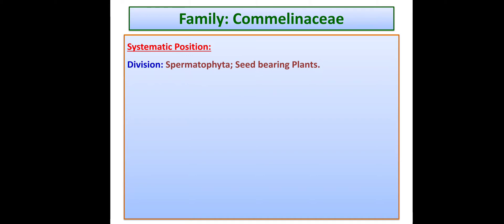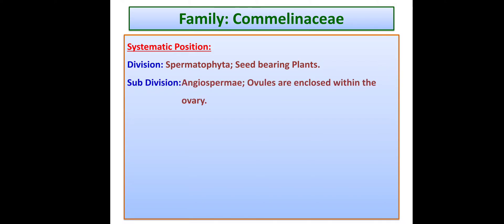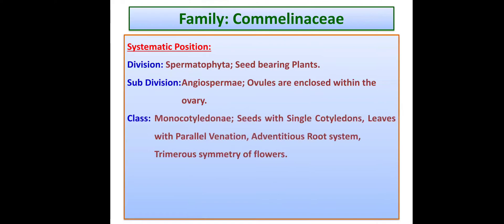Starting with the systematic position: Division is Spermatophyta — seed bearing plants. Subdivision is Angiospermae, because seeds are enclosed within the ovary. Then comes the class, which is Monocotyledon. It is monocot because the seed shows only one cotyledon, and the leaf shows parallel venation.